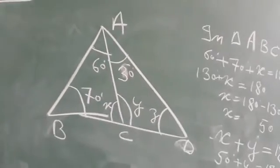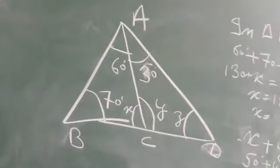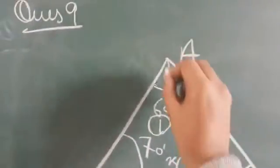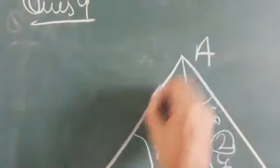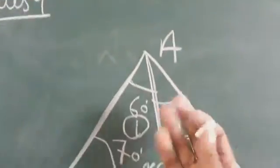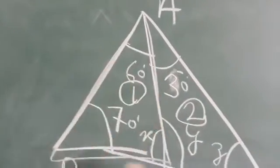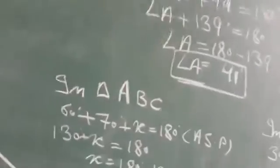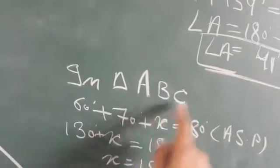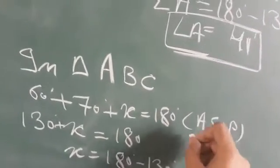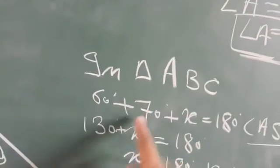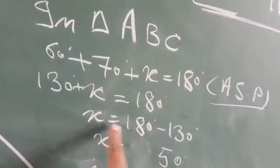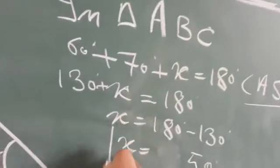First triangle ABC के तीनों angles का sum: 60 + 70 + X = 180 degree due to Angle Sum Property। 60 + 70 = 130 degree। जब 130 दूसरी side जाएगा minus का हो जाएगा। X = 180 - 130 = 50 degree।